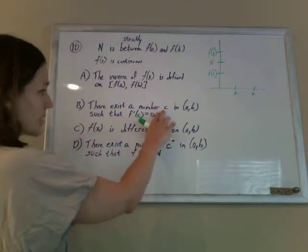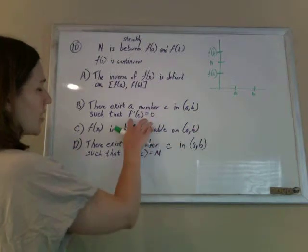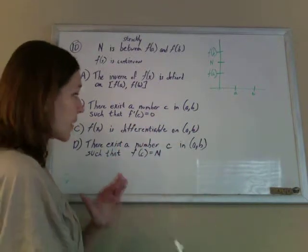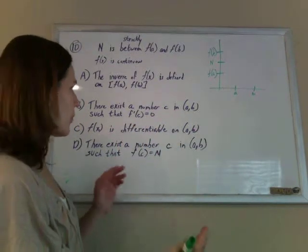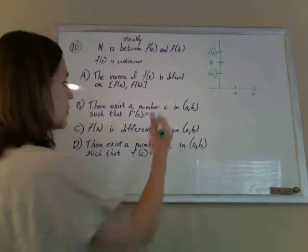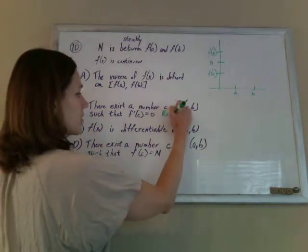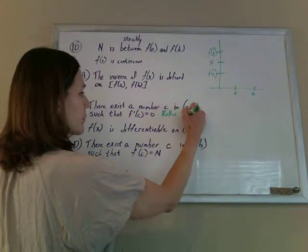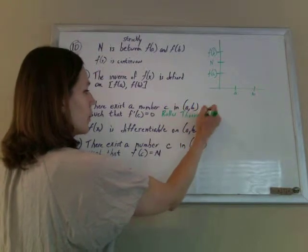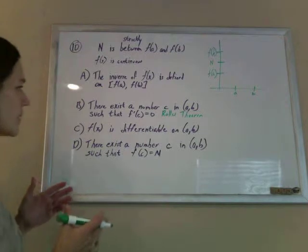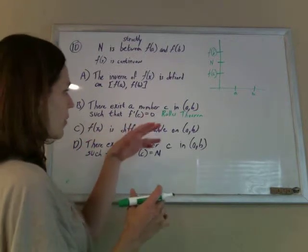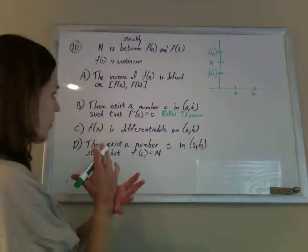There exists a number c in a, b, such that f prime of c equals zero. Now, this is more calculus-y. This is like, oh, that rings a bell. Well, this theorem is Rolle's theorem, or is the conclusion for Rolle's theorem. But Rolle's theorem, I don't think we have the criteria to make Rolle's theorem contributed.